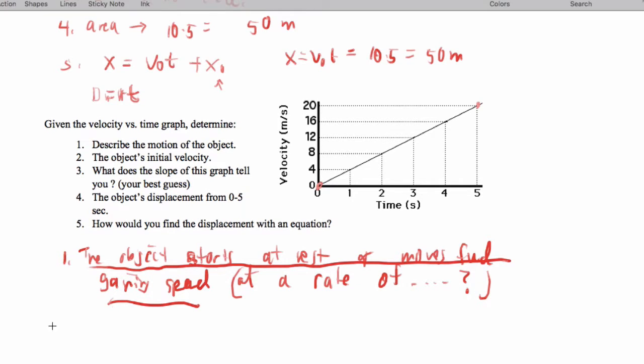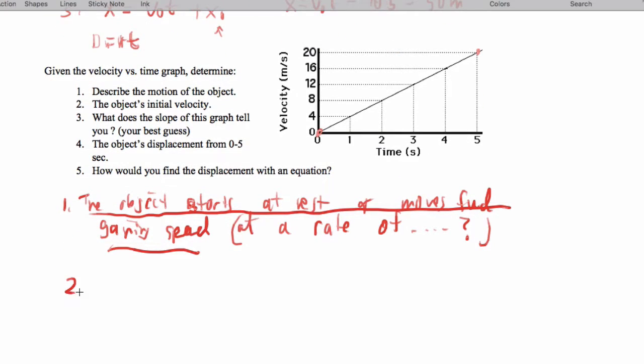The object starts at rest and moves forward. Now the object's initial velocity is zero meters per second. The slope of this graph, so the rate at which our speed increases, the word we're looking for, acceleration.